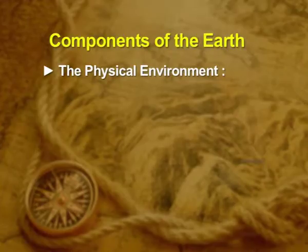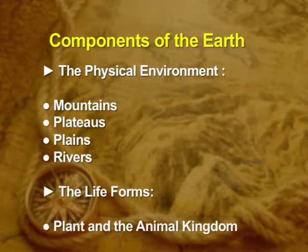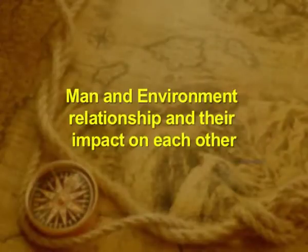We study two major components of the Earth. The first is the physical environment, which includes mountains, plateaus, plains, rivers, etc. The second component includes all life forms — the plant and animal kingdom. The interdependency of these two components helps us understand human geography. The core concern of geography is to understand the man–environment relationship and their impact on each other.